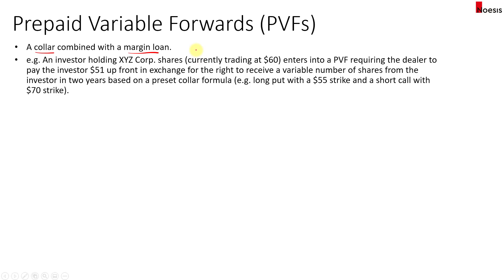For example, we have an investor holding shares of XYZ Corp currently trading at $60. The investor enters into a PVF, which requires the dealer to pay the investor $51 up front in exchange for the right to receive a variable number of shares from the investor in two years, based on a preset collar formula.